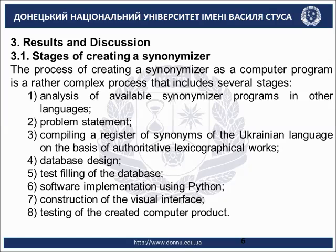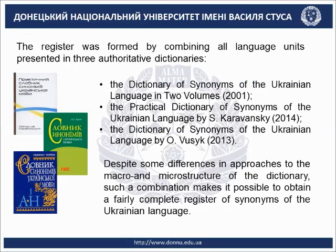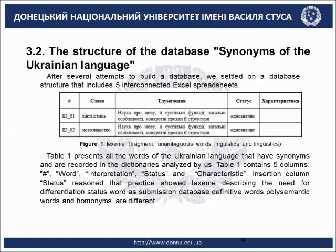It is only natural that before creating our own computer program, we analyzed the synonymizer programs available on the Internet. The majority of available programs are based on English and Russian. The register was formed by combining all language units presented in three authoritative dictionaries. Despite some differences in approaches to the macro and micro structure of the dictionary, such combination makes it possible to obtain the fullest complement register of synonyms of the Ukrainian language. The structure of the database of synonyms of the Ukrainian language: after several attempts to build a database, we settled on a structure that includes five interconnected Excel spreadsheets.